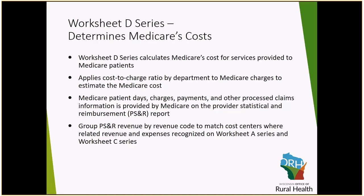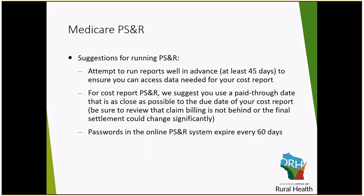To complete your Worksheet D series, we recommend that you utilize a Provider Statistical Reimbursement Report from Medicare, also known as a PSNR report. The PSNR report will include information such as patient days, charges, payments, and other processed claim information. Grouping your PSNR report by revenue code to match the cost centers where the revenue and expenses were reflected on Worksheet A and Worksheet C is the best method to use when completing your D series. When you look at your PSNR report, you will want to assign the revenue codes the same way you assigned them on Worksheet C, so that your revenue is reflected on the same line item as it is on Worksheet C and where the costs are reflected on Worksheet A.